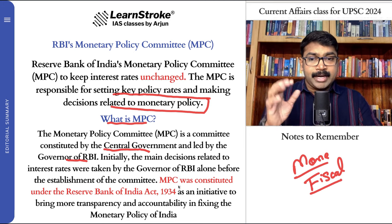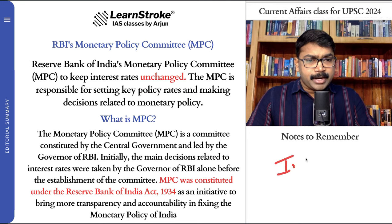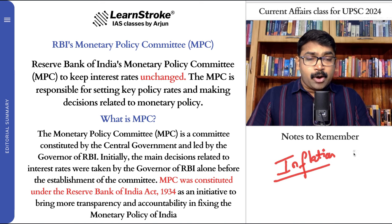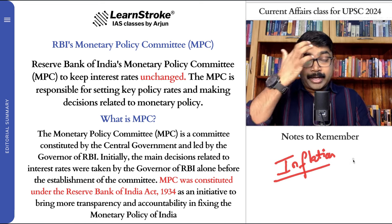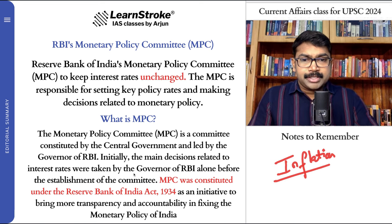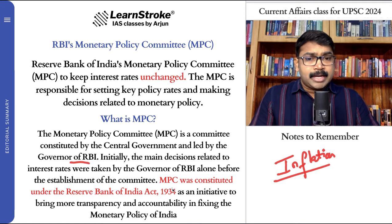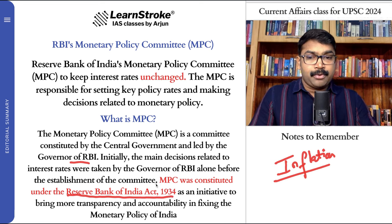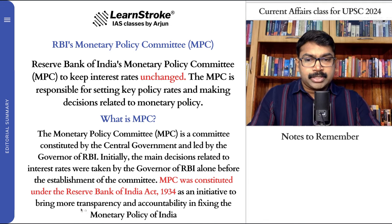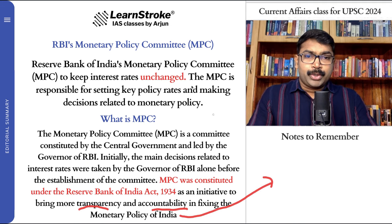Previously, the main decisions relating to interest rates — and whenever there is inflation, what does RBI do? We have tools like reverse repo, CRR, SLR. All these decisions were actually taken by the RBI and the Governor alone. Later, the Monetary Policy Committee was constituted under the Reserve Bank of India Act 1934, created for more transparency and accountability in fixing the monetary policy of India.